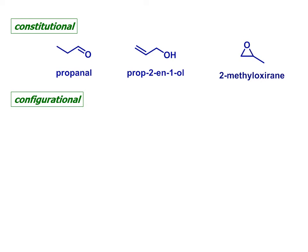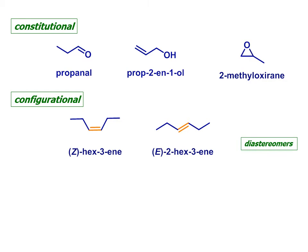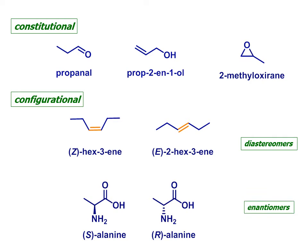Or configurational isomers, like these E and Z hexene isomers, which are diastereomers or diastereoisomers, or R and S alanine, non-superimposable mirror images, which we call enantiomers.